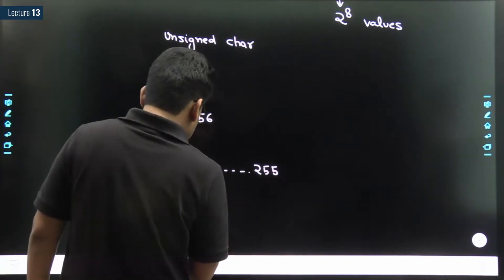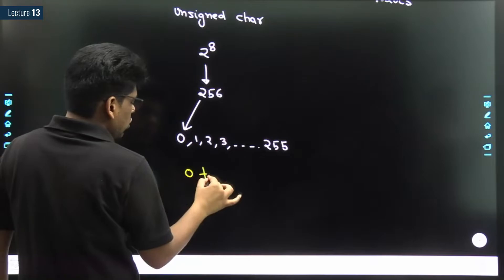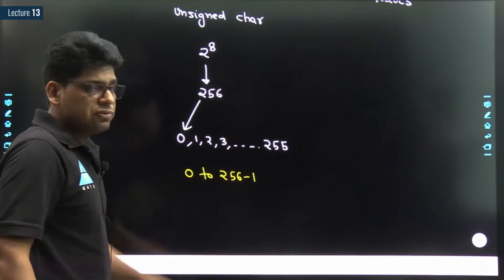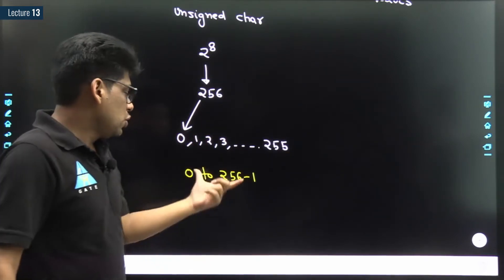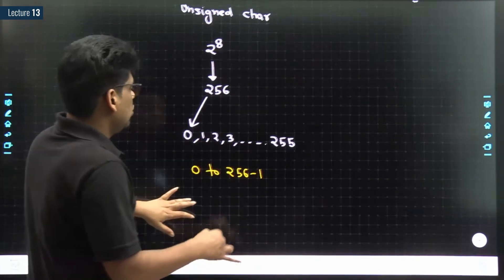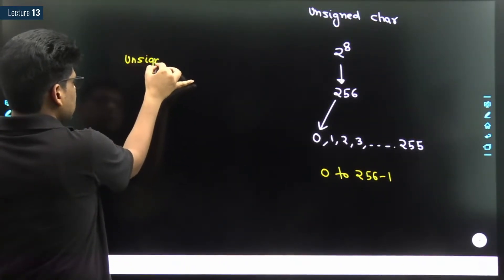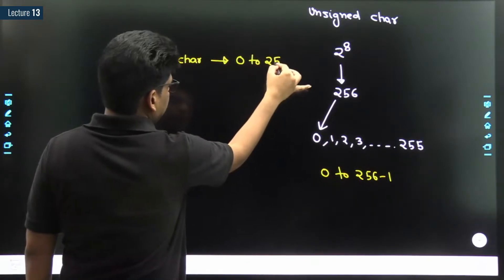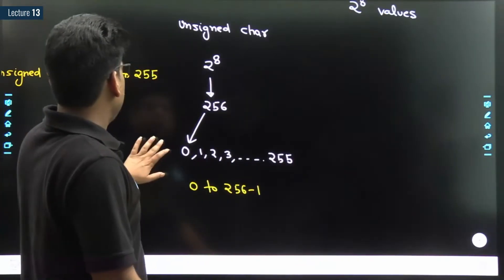The range of unsigned char is 0 to 256 minus 1, which is 0 to 255. It is minus 1 because in case of unsigned char, counting does not start from 1, it always starts from zero. So we have used one number for zero. Therefore the range of unsigned char is 0 to 255.